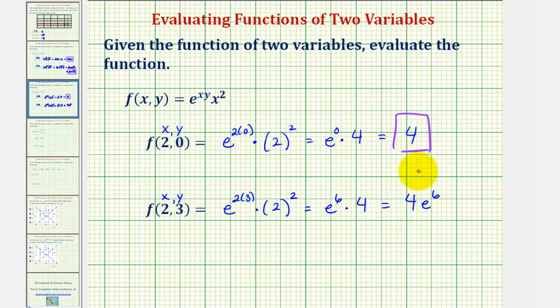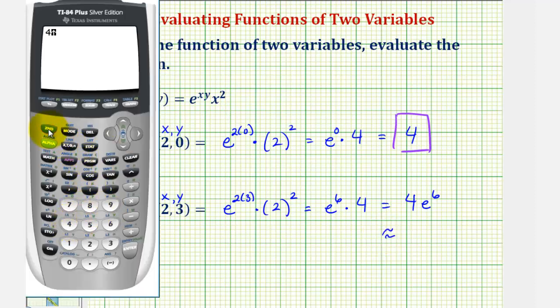Let's also get our decimal approximation for this using the calculator. Four, and if we press second ln for second natural log, it brings up e raised to the power of, which would be 6, close parenthesis, and enter.